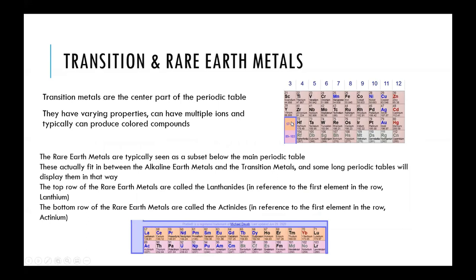The transition metals are in the center of the periodic table, and they have some unique properties. They're very conductive and typically rather dense. These transition elements can have multiple different versions of their ions, or varying numbers of electrons.